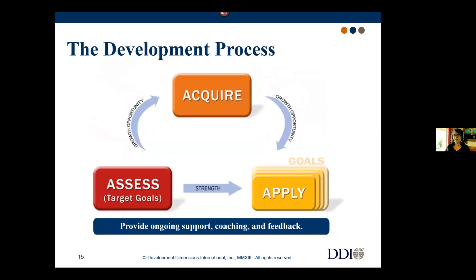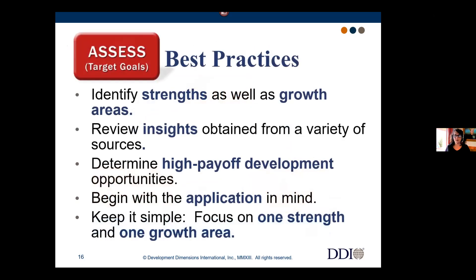The process has three phases: assess, acquire, and apply — with ongoing support, coaching, and feedback throughout. In the assess phase, goals are targeted with the highest payoff to the person being developed. In acquire, you act on a plan. In apply, those practices are put to use in real situations — a critical part, because if a person can't find a way to use a skill, they won't use it. In assess, development needs to focus on more than just areas requiring growth; you need to identify strengths as well.